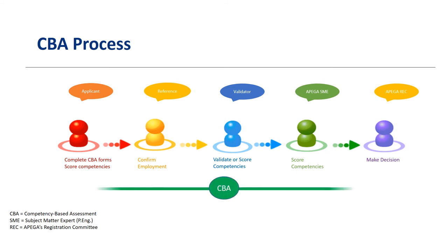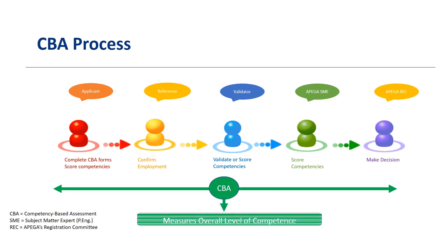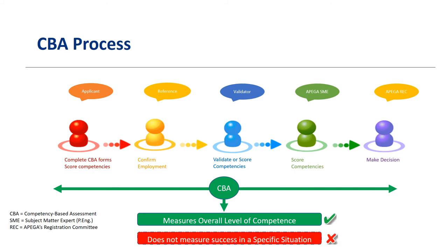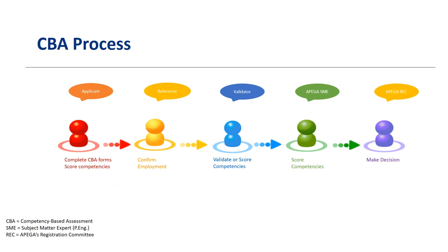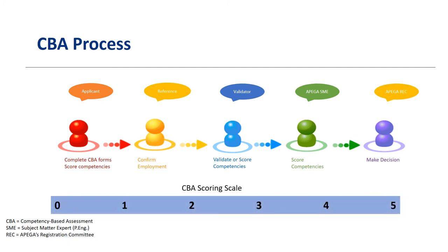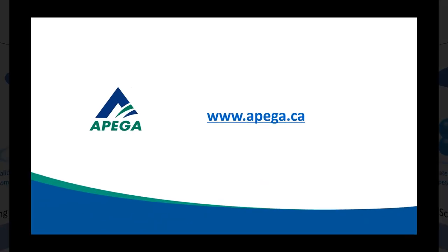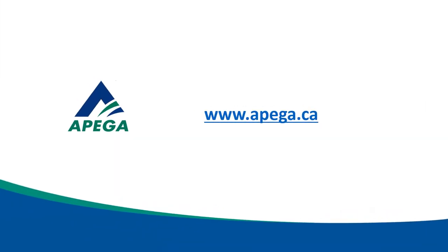The CBA process measures the overall level of competence rather than the level of success an applicant has achieved in a specific situation. It is not a rating of applicants' performance as an employee, but rather a rating of applicants' knowledge, skills, and abilities as a professional engineer. The scoring system, which ranges from 0 to 5, will be used by engineering applicants to score their levels of expertise in each of the key competencies, as well as for the validators who will validate applicants' competencies by providing a score and comments to verify the level of applicants' expertise and experience. Please note that the examples for each competency reinforce the ratings or scores rather than the other way around. For more information on the application process and other resources, please visit APEGA's website at www.apega.ca.